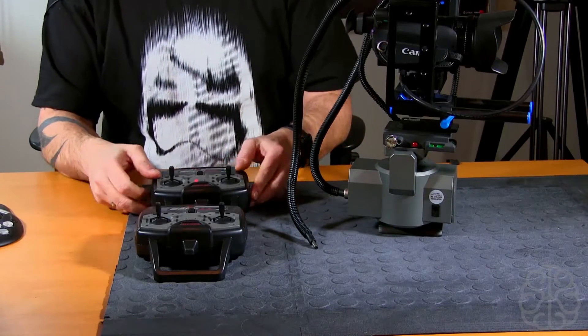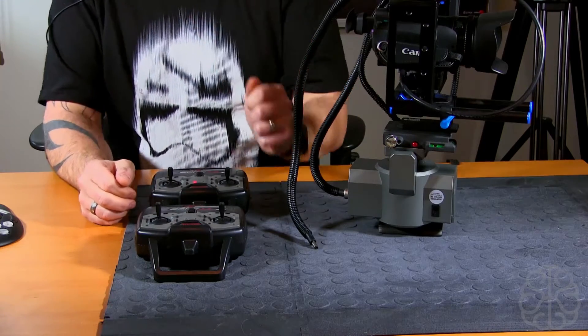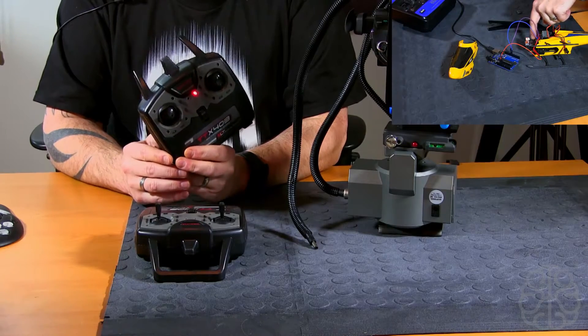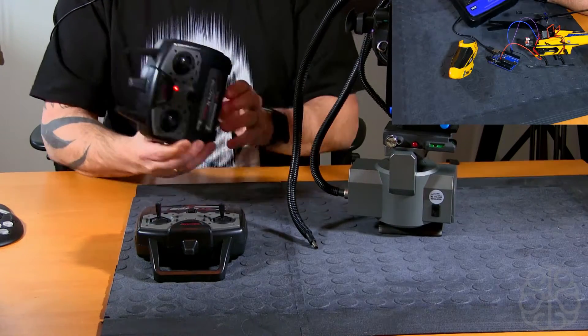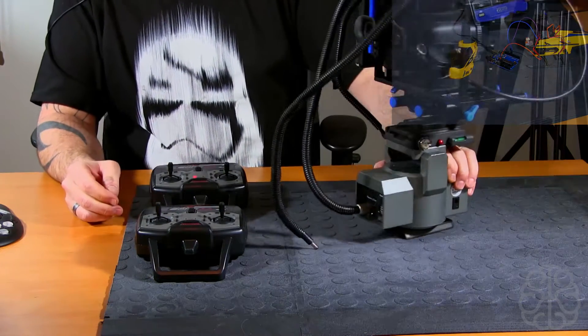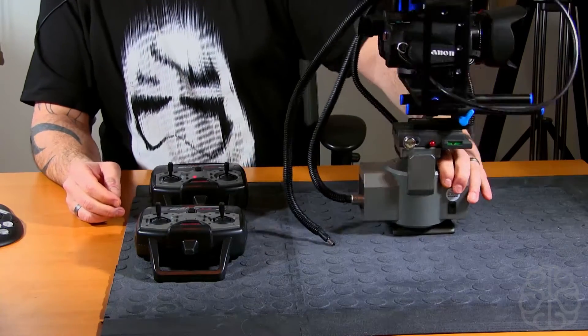All right, welcome back guys. Ivan from BrainyBiz.com. If you saw our last video, we showed you how to read the values from an RC receiver with an Arduino. Today we're going to show you how I built this pan and tilt with zoom capabilities to help us do our videos.